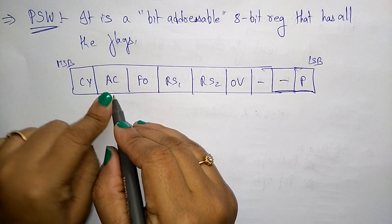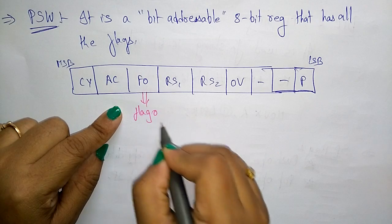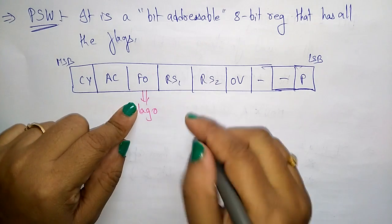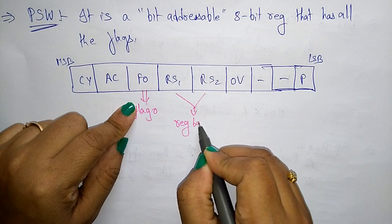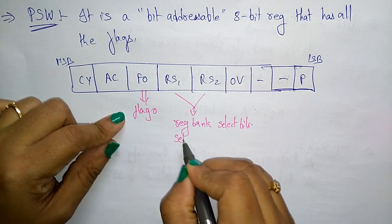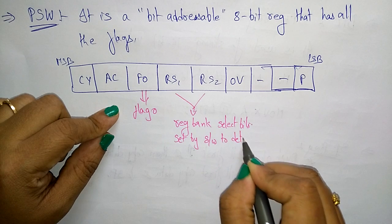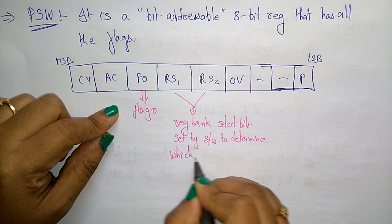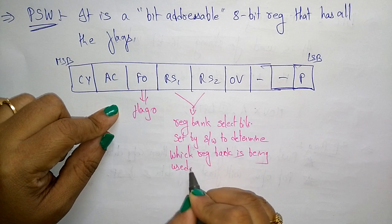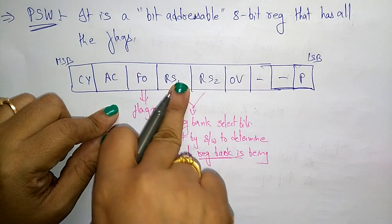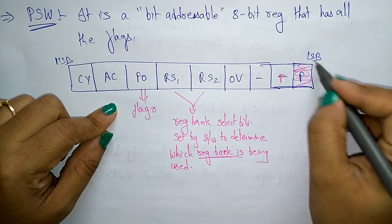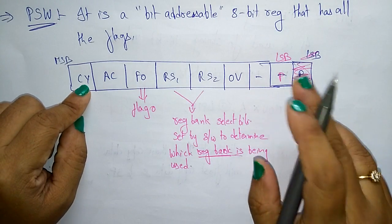The carry flag and auxiliary carry flag are standard flags. Flag 0 is available to the user for general purpose. RS1 and RS2 are register bank select bits — set by software to determine which register bank is being used. OV is the overflow flag, and P is the parity flag: 1 indicates even parity, 0 indicates odd parity.